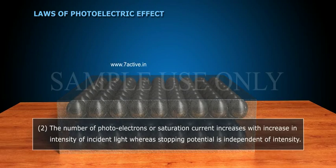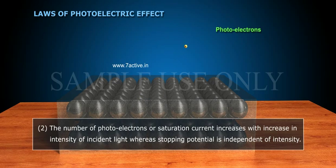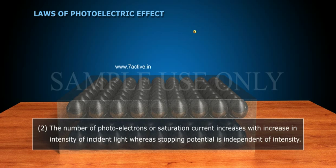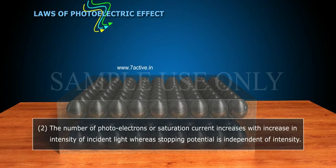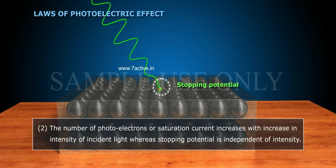2. The number of photoelectrons or saturation current increases with increase in intensity of incident light, whereas stopping potential is independent of intensity.